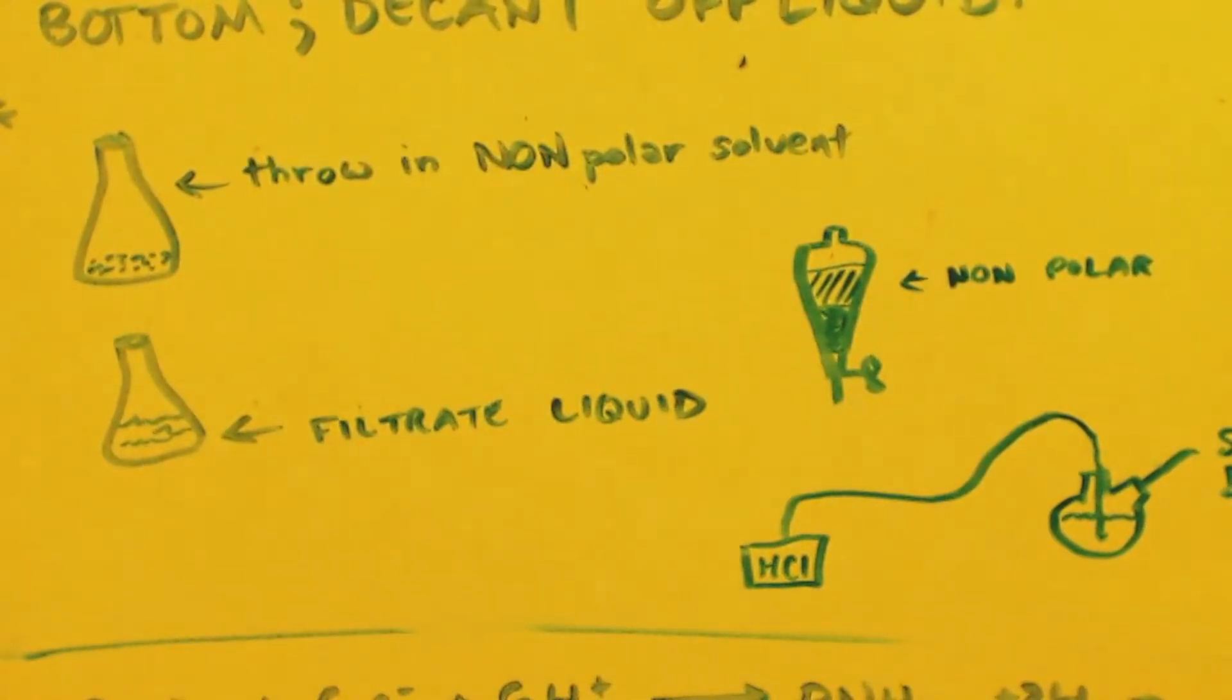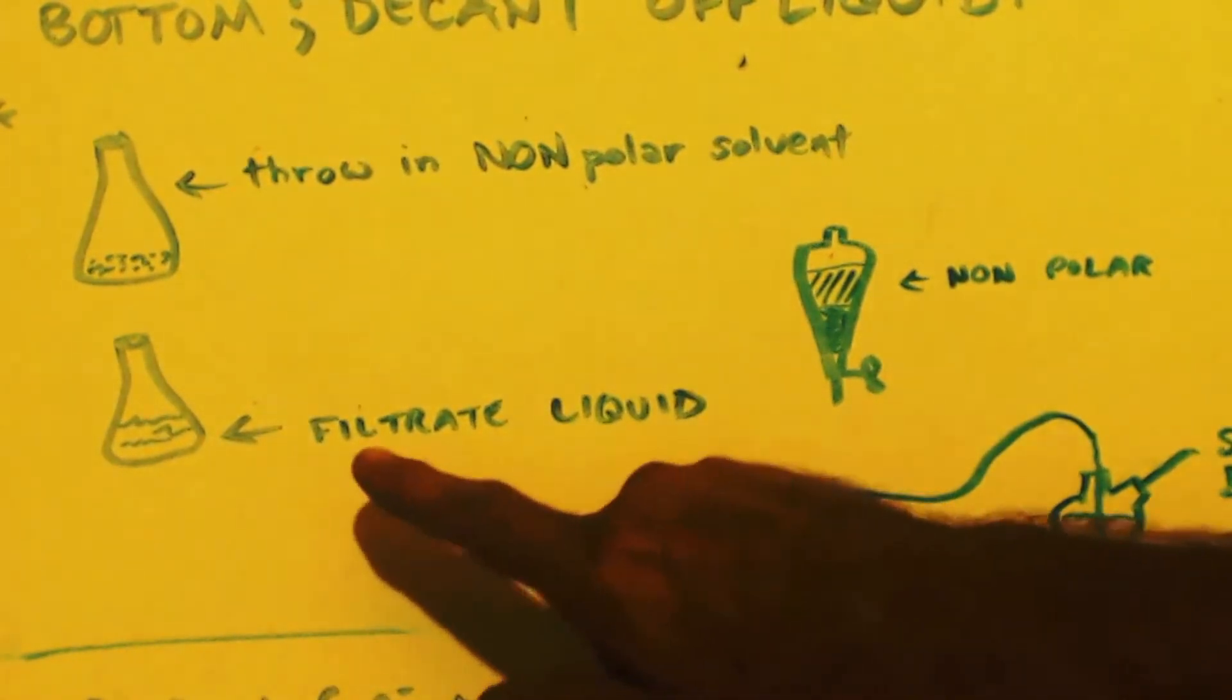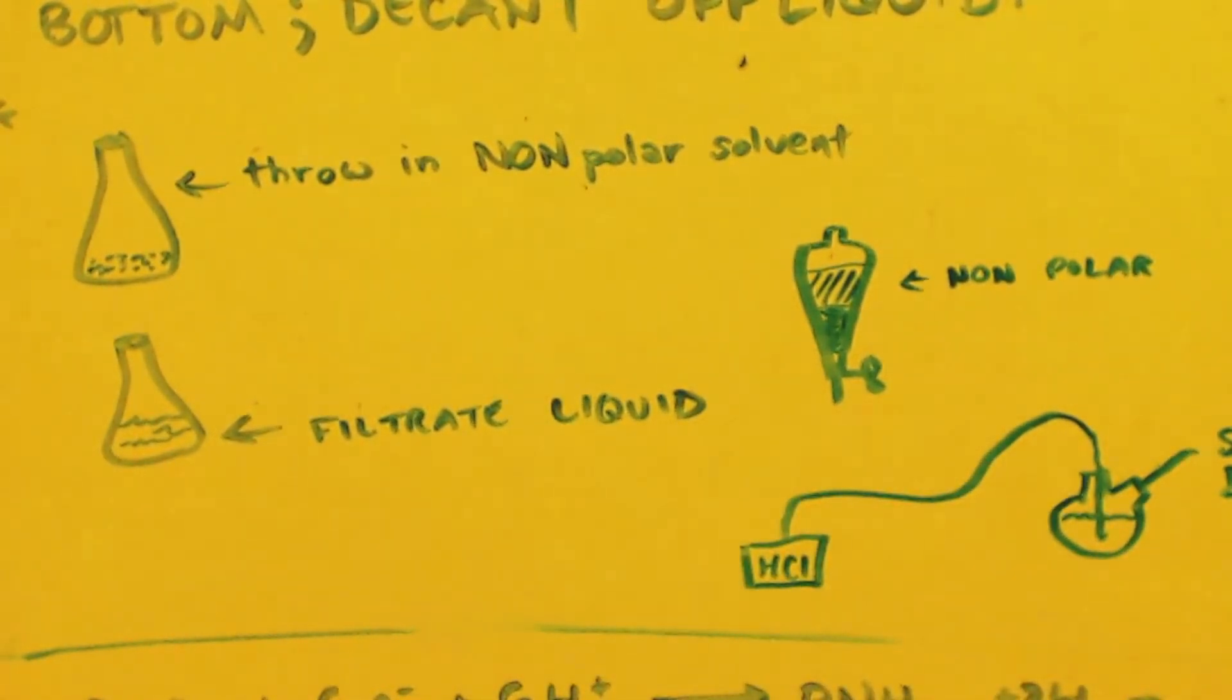You're going to have other impurities in there like maybe unreacted nitromethane and some other stuff. Chemistry has got a couple hundred million little impurities or whatever. If they're hydrocarbons, they will also be in your mother liquor.